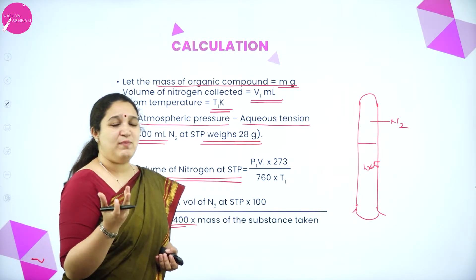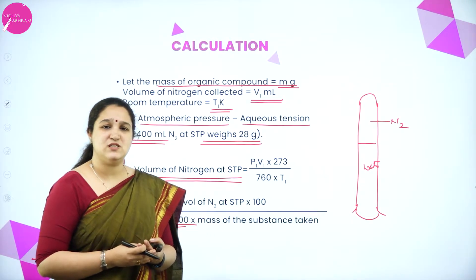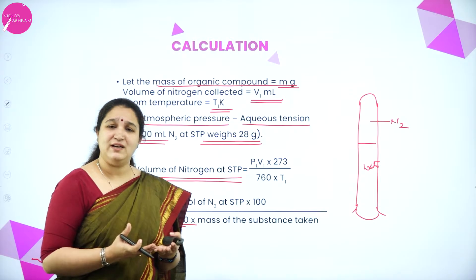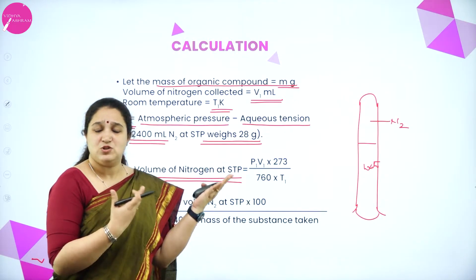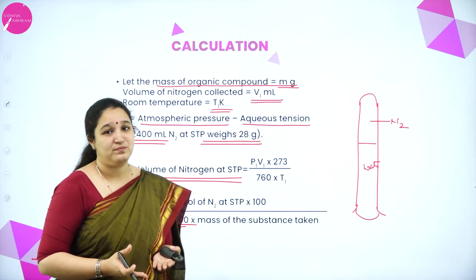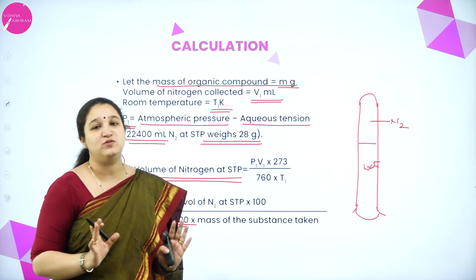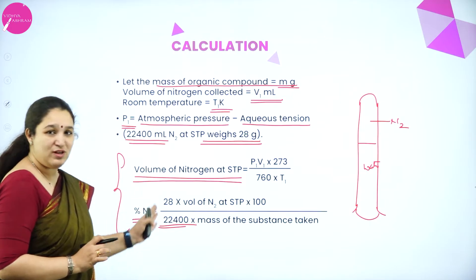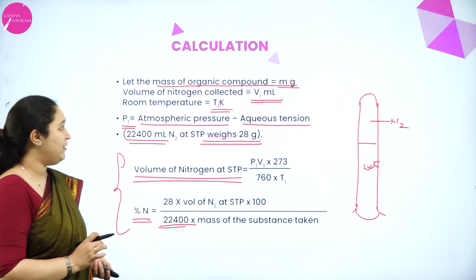You might ask: why are we not bothered about KOH or the water formed? Because we don't want to calculate the percentage of carbon and hydrogen here — there's a separate, easier method for that, which is Liebig's method. This is only for estimation of nitrogen, and we are only bothered about the nitrogen which is collected.